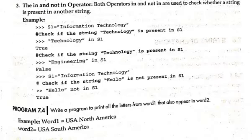In and not in operators check if a string is present in another string. 'H' in 'hello' returns true. 'HE' in 'hello' returns true. 'HEL' in 'hello' returns true. S1 equals 'information technology'. 'Technology' in S1 returns true. 'Engineering' in S1 returns false. 'Hello' not in S1 returns true.